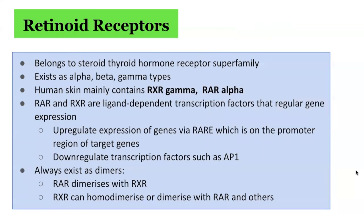The retinoid acid receptors belong to the steroid thyroid hormone receptor superfamily and can exist as alpha, beta, or gamma types. In human skin, the important receptors are RXR-gamma and RAR-alpha. RAR and RXR are ligand-dependent transcription factors that regulate gene expression. When activated, they can up-regulate expression of genes via the retinoic acid response elements on the promoter region of target genes, and can also down-regulate other transcription factors. RAR always dimerizes with RXR, whereas RXR can act as homodimers or form heterodimers with other nuclear receptors such as vitamin D3 and thyroid hormone, making RXR important in cross-talk between nuclear hormone signaling pathways.